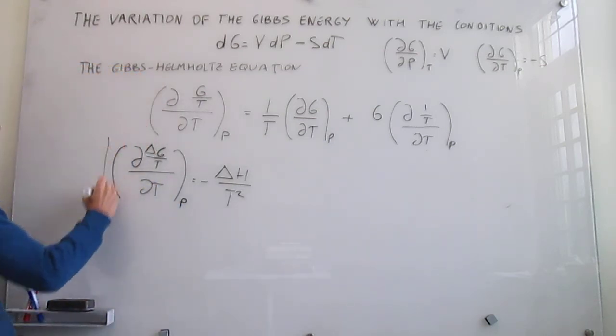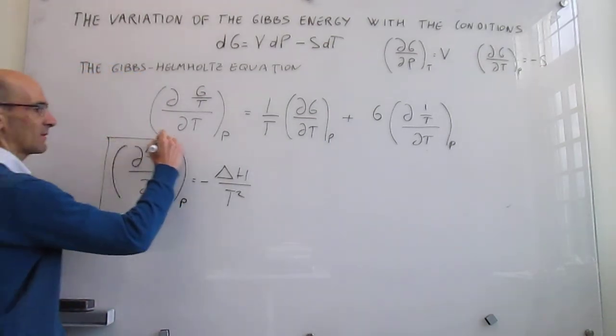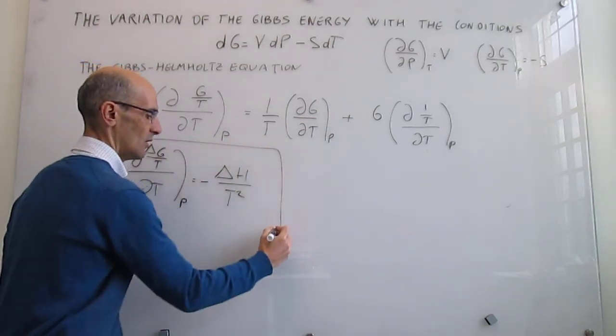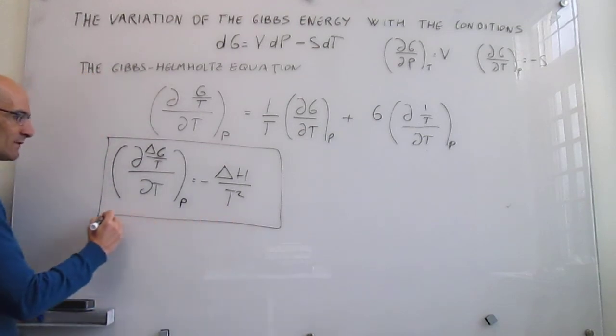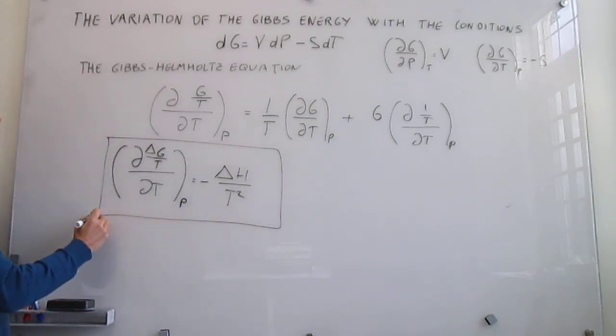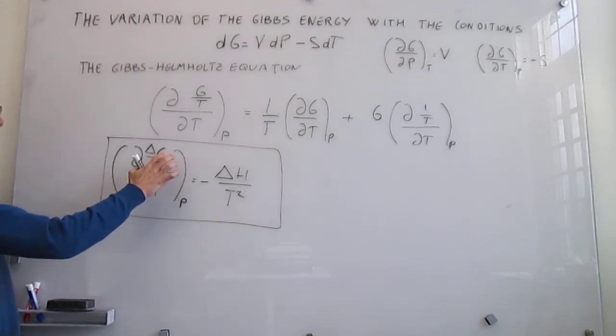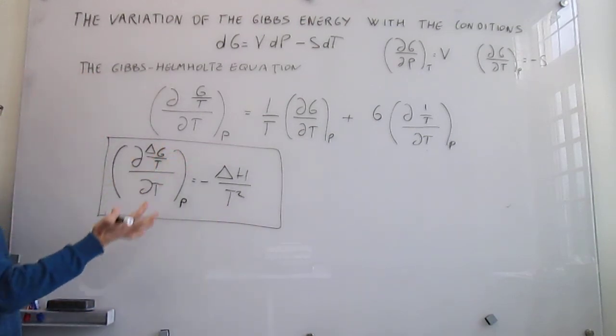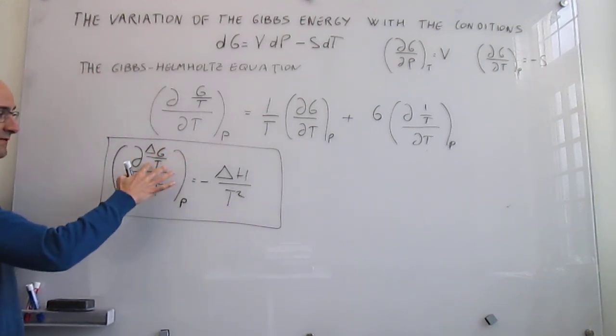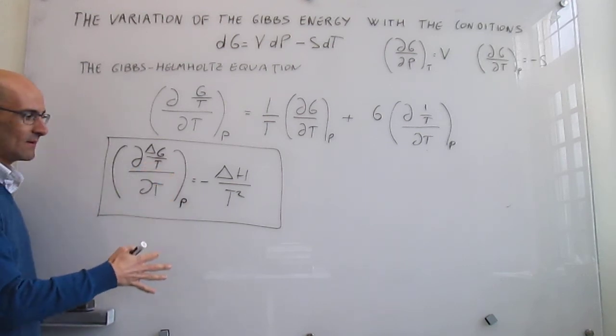So this is the Gibbs-Helmholtz expression. It will be very useful in the future — it tells you how the Gibbs energy of a process divided by temperature depends on temperature.